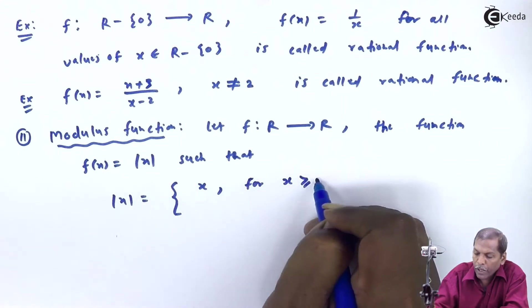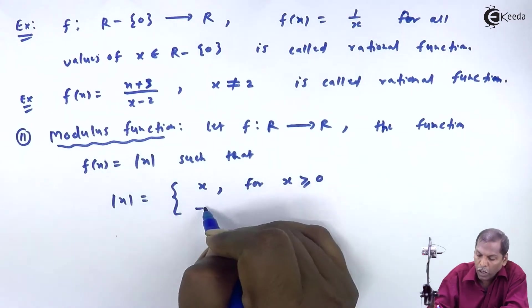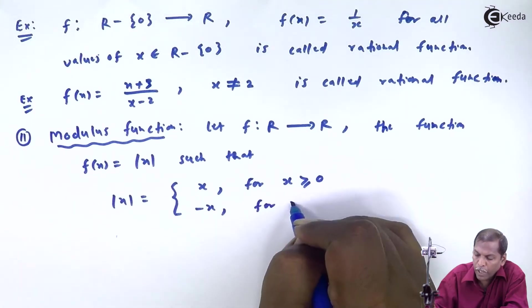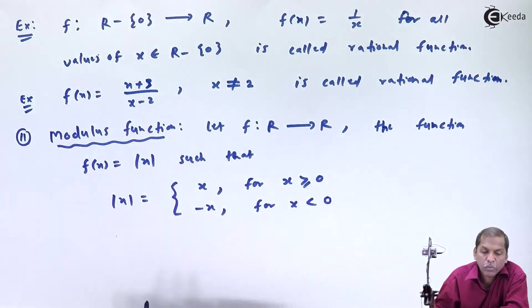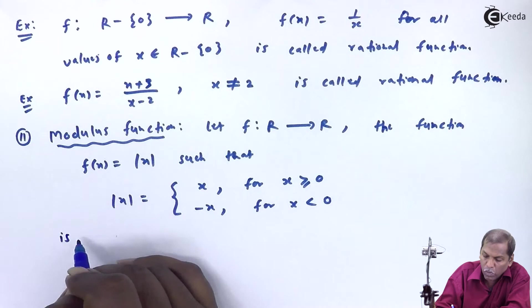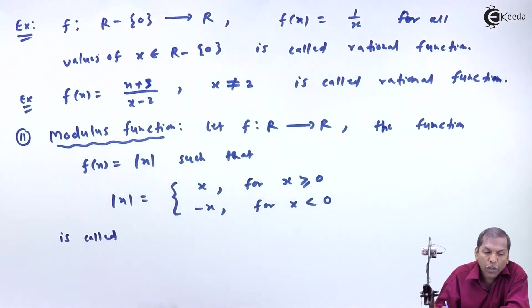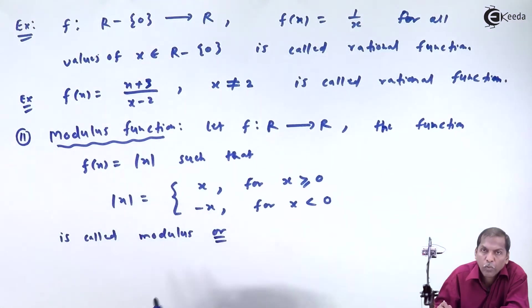For x greater than or equal to 0, and negative for x less than 0, is called the Modulus or Absolute Value Function.